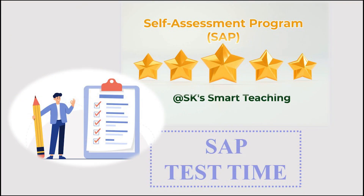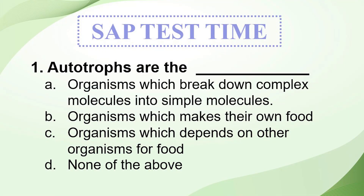Before going to learn the second function of a leaf, let's do the SAP test. Your first question is: autotrophs are the — A: organisms which break down complex molecules into simple molecules; B: organisms which make their own food; C: organisms which depend on other organisms for food; D: none of the above.